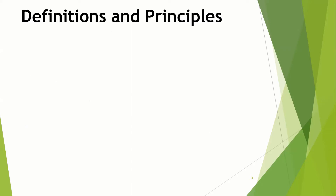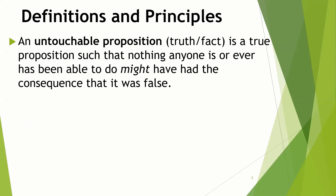Continuing with some definitions and principles — these are unique. Van Inwagen is introducing these terms of art and provides very specific definitions, so I'm sticking closely to the text throughout the video. An untouchable proposition — a true proposition such that nothing anyone is or ever has been able to do might have had the consequence that it was false. This is very strong. An untouchable proposition is one that you and I can't do anything about; we can't do anything to make it false.